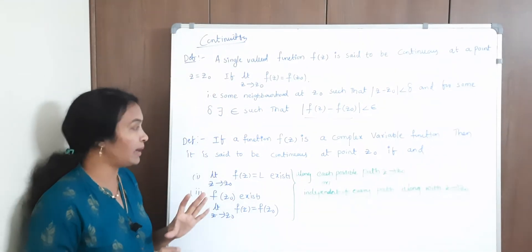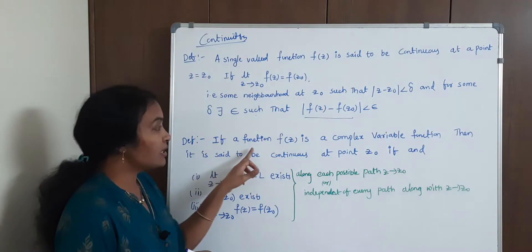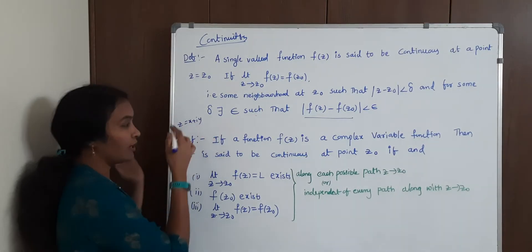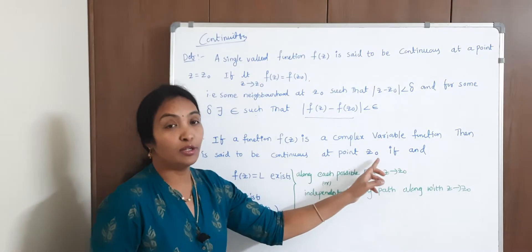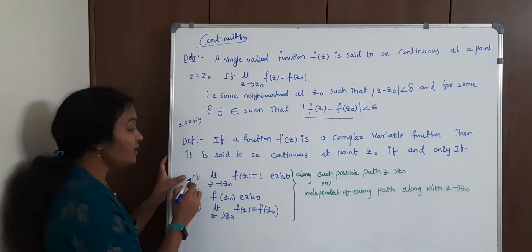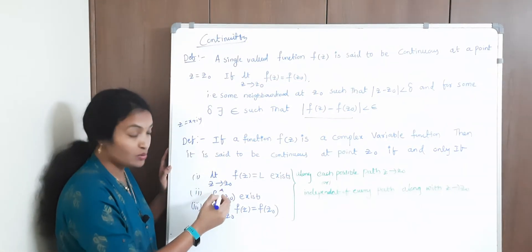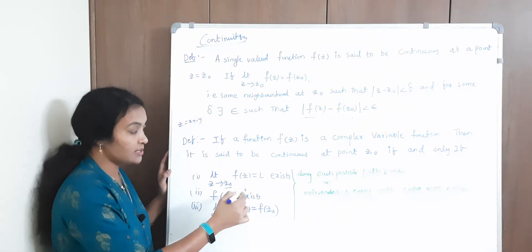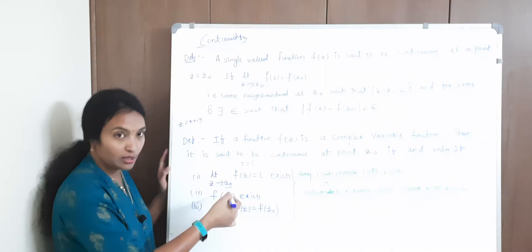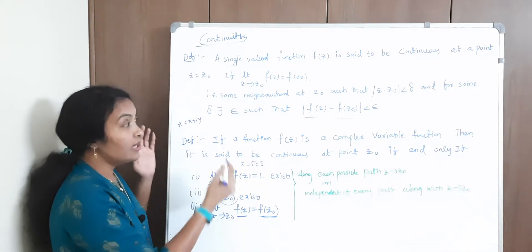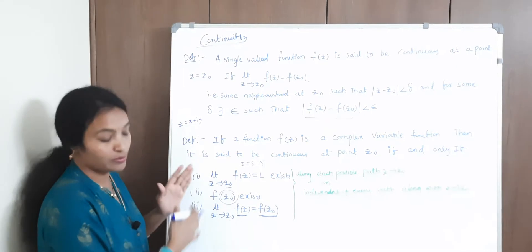Let me explain in a simple manner. What is a continuous function? If function f(z) is a complex variable function — that is z in terms of x and iy — then it is said to be continuous at z naught if and only if it satisfies our limit: limit z tends to z naught, f(z) = l. The limit must exist at z naught, and f of z naught must also exist, meaning you get both left-hand side limit and right-hand side limit equal. Then this function value is also the same — it is a continuous function.